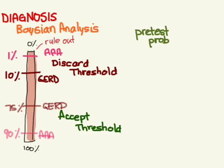So I have to be 90% sure that it is triple A before I'm willing to accept it. If I'm 95, 96, 97, I'm going to accept it. And now for GERD, I have to be 75% or more before I'm willing to accept this diagnosis, before I'm willing to rule it in.